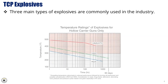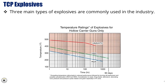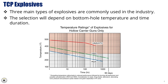TCP explosives. In the oil and gas industry, three main types of explosives are commonly used for TCP applications: HNS-HTX, HMX, and RDX. Each of these explosives has unique properties that make them suitable for specific conditions. The selection of the appropriate explosive largely depends on critical factors such as the bottom hole temperature and the expected duration of the operation. Higher temperatures may require explosives that can withstand more extreme heat, while the operation time may influence the choice based on how long the explosive needs to maintain its stability and effectiveness. Therefore, choosing the right explosive ensures optimal performance and safety during the perforation process.